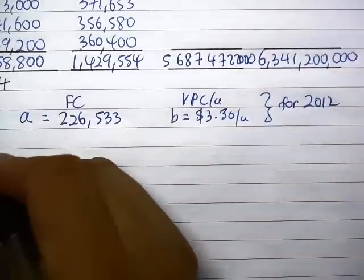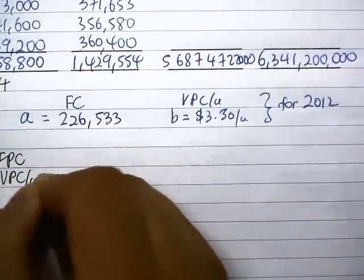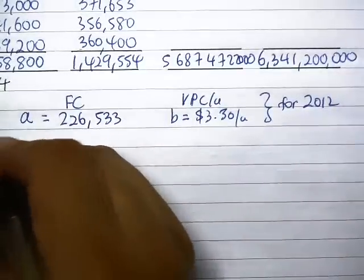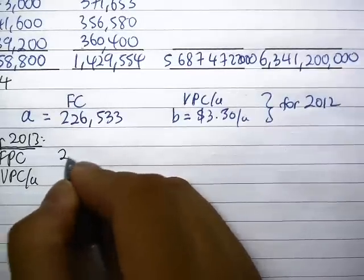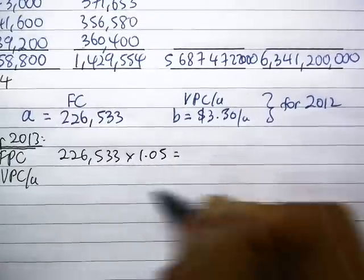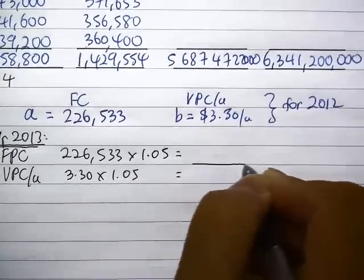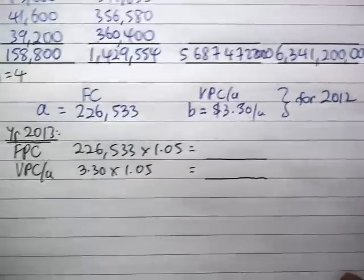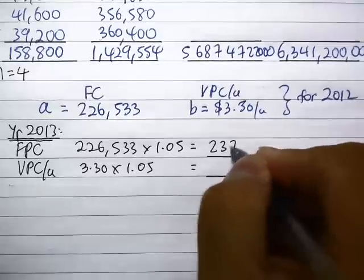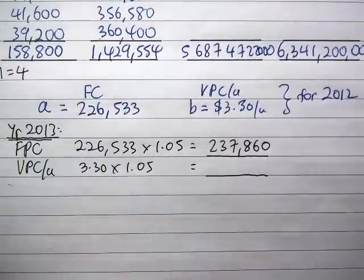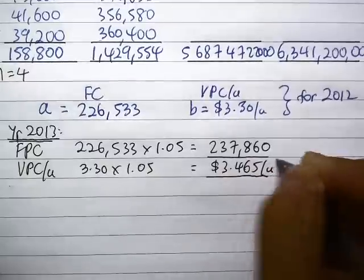So the question is asking what is your fixed production cost and variable production cost for year 2013. So what you've got to do here is to inflate once more. And here you go, you're going to get the answer. So 238,160 and 3.465.